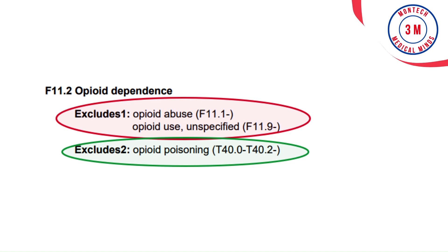The reason is that use, abuse, and dependence are a sequence of conditions that develop progressively. The patient initially uses opioid, and at a certain stage may become abusive toward opioid — so opioid use is included in abuse. Then, with continued opioid abuse, the patient may become dependent. The condition progresses from opioid use to opioid abuse and then opioid dependence. Therefore, use, abuse, and dependence cannot be coded together, as the patient can exist in only one phase of the disease process.